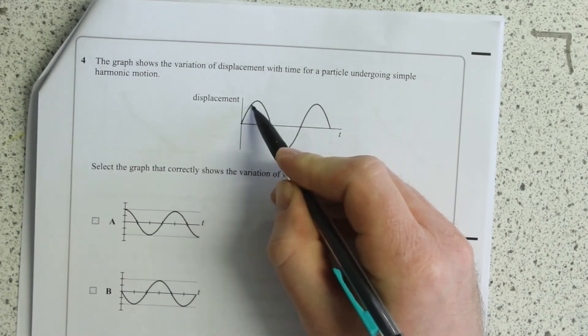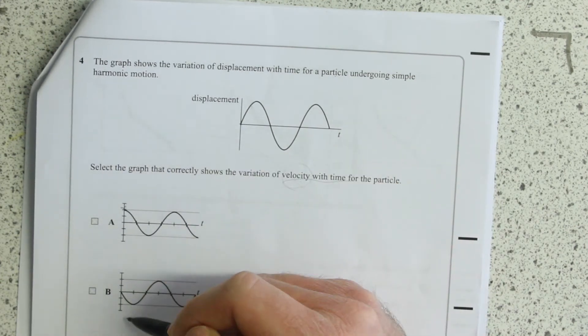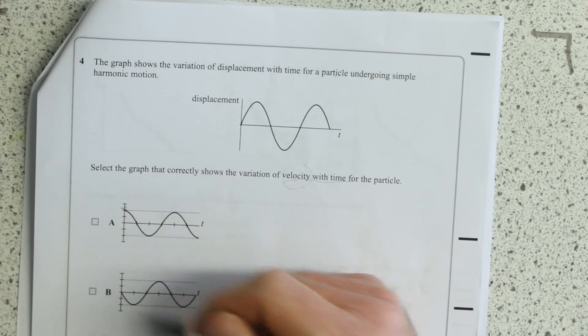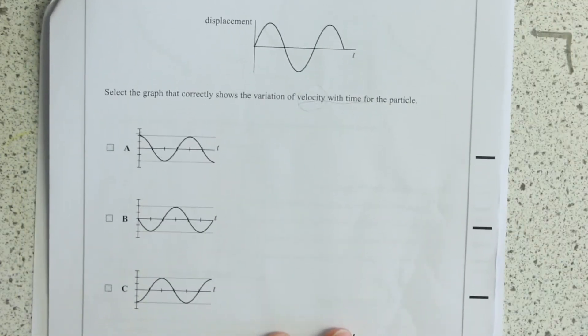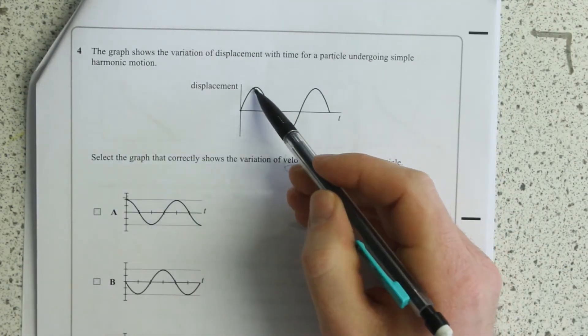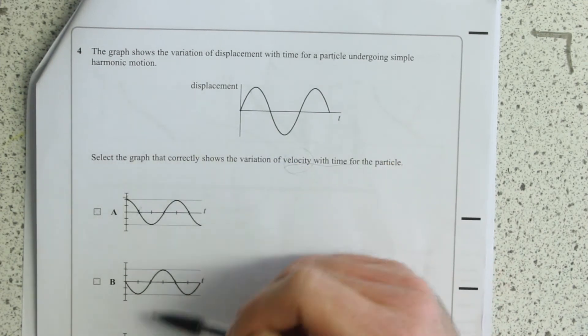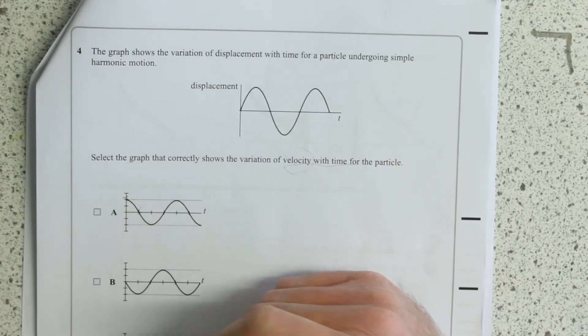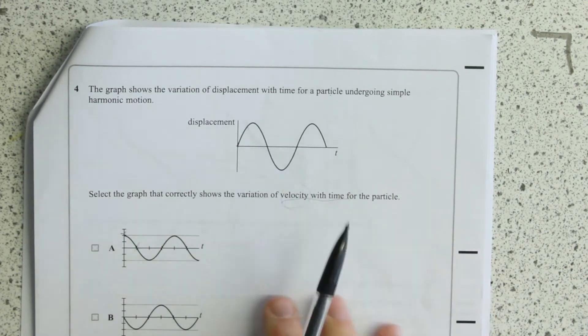So you just got to think, well, how high is the gradient? At first, the gradient is high and positive, so it can only be A already. Then the gradient is zero, that could be that one, but that wasn't high positive at start.